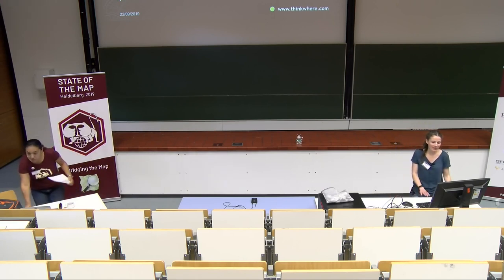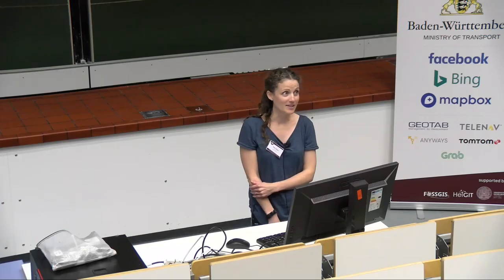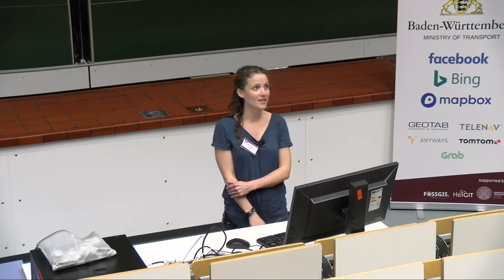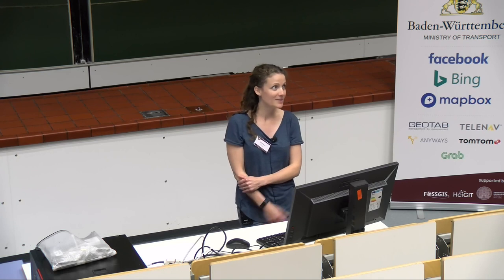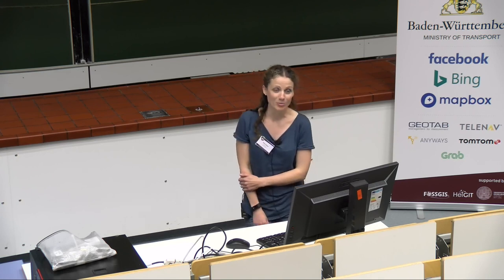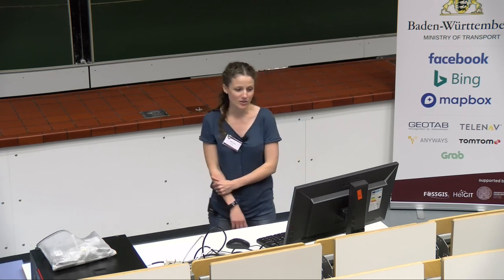I'm here today to talk about the Our Falkirk project, which is an online community resource created with and for the Fairer Falkirk team at Falkirk Council, a local government organisation in Scotland, to support the work that they do to help minimise the impacts of poverty for those living in the Falkirk Council area. It does this by providing information on where to find particular types of support in the area. The tool is designed using open data, specifically OpenStreetMap and open source technologies, which is why I'm here to talk to you about it today.